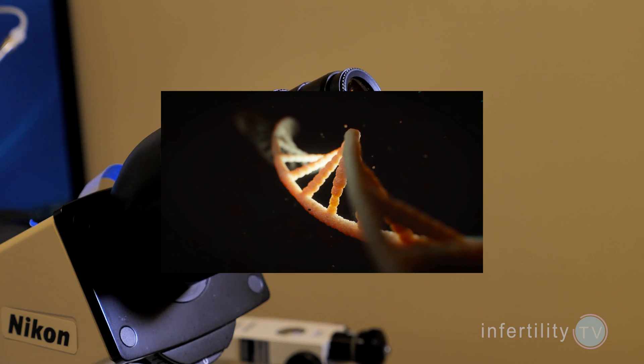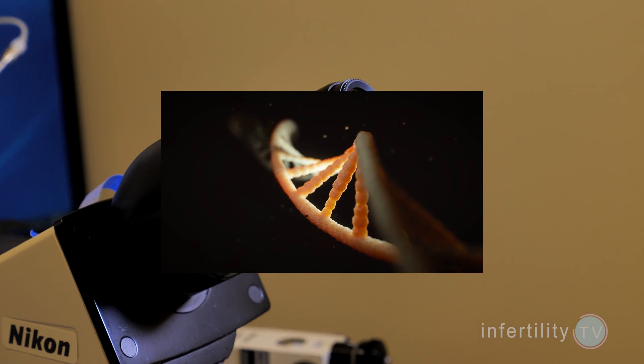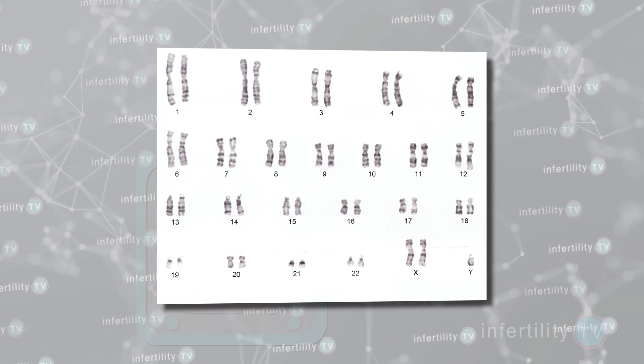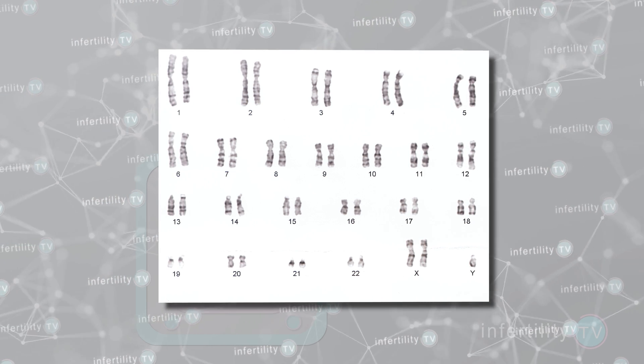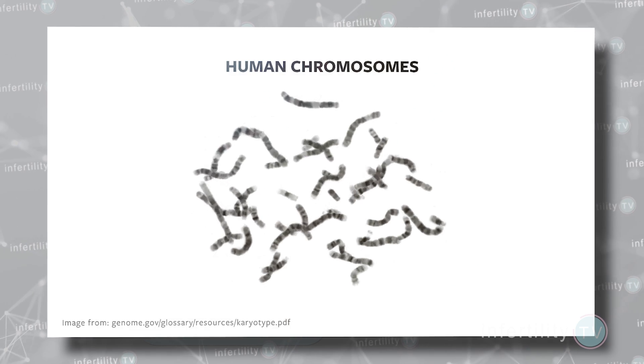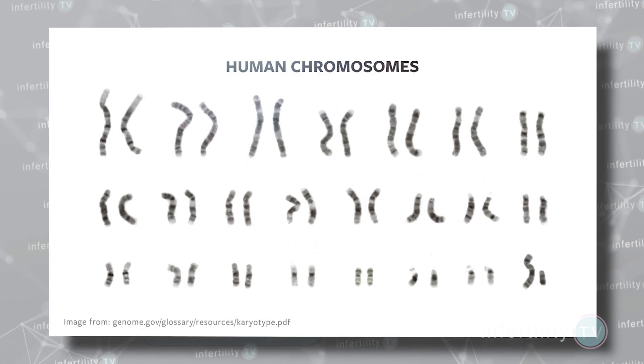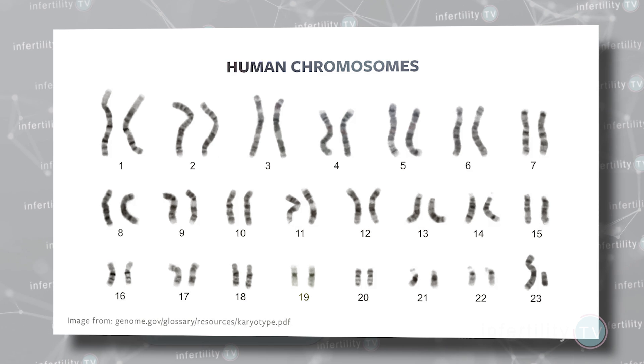There are some embryos that look perfect under the microscope but have other kinds of abnormalities. The most common type are embryos which don't have the correct number of chromosomes. A healthy normal embryo has 46 chromosomes — 23 from the father and 23 from the mother. It is extremely common for humans to have embryos with too many or too few chromosomes.